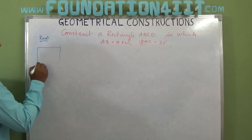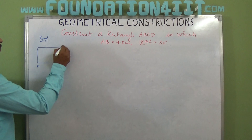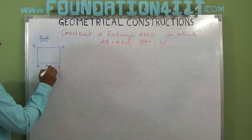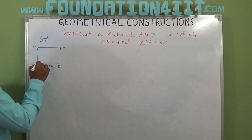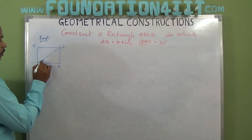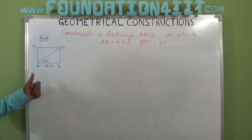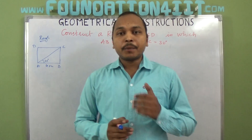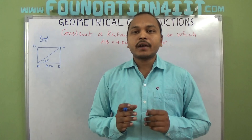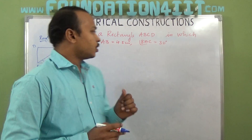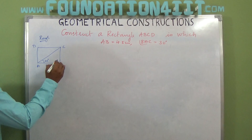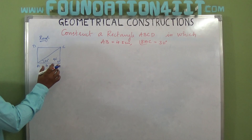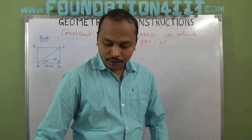In this rectangle ABCD, AB one side is given as 4.5 cm and angle BAC — the angle between the diagonal and side — is given as 30 degree. When you apply the properties of a rectangle: opposite sides are equal, and every angle is 90 degree. So these two properties we will also use to construct this rectangle. Angle B is 90 and every angle is 90 degree — with this data we will start construction.